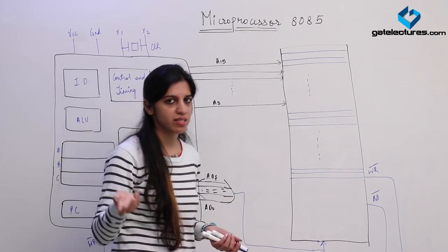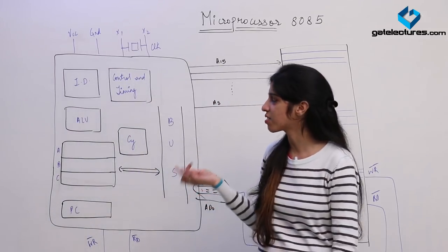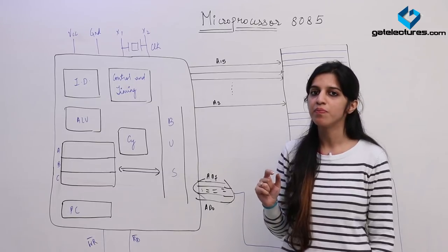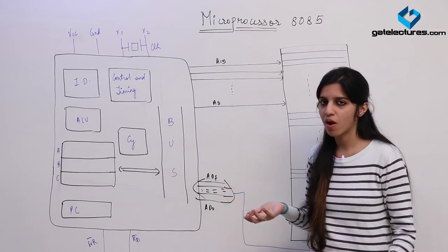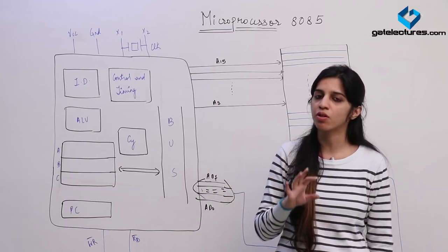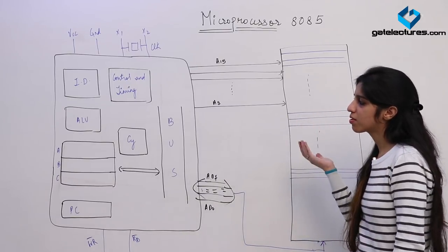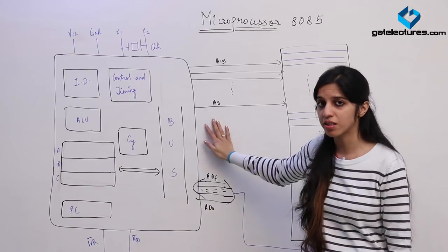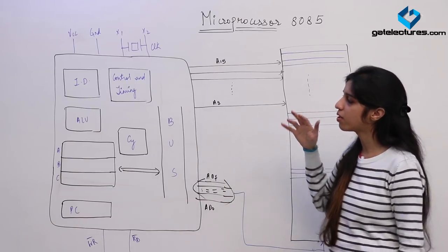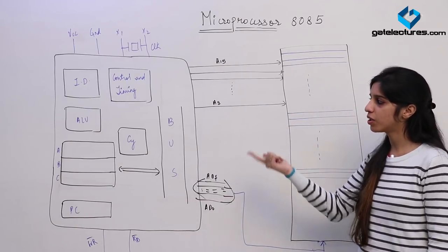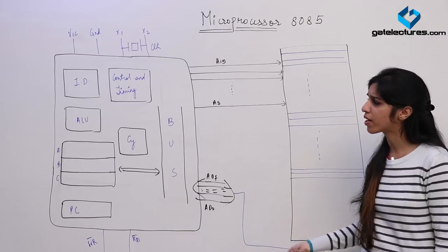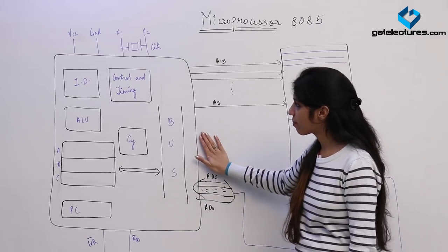You might have seen in digital electronics that we can design an adder and a subtractor. But how many gates and logic circuits are you going to put on one PCB? There is a limitation to a PCB — the number of gates you can put is limited. So somebody got the idea to make an IC that can perform a number of arithmetic and logical operations — addition, subtraction, and logical operations like AND, OR, XOR. With this idea, they designed a microprocessor.